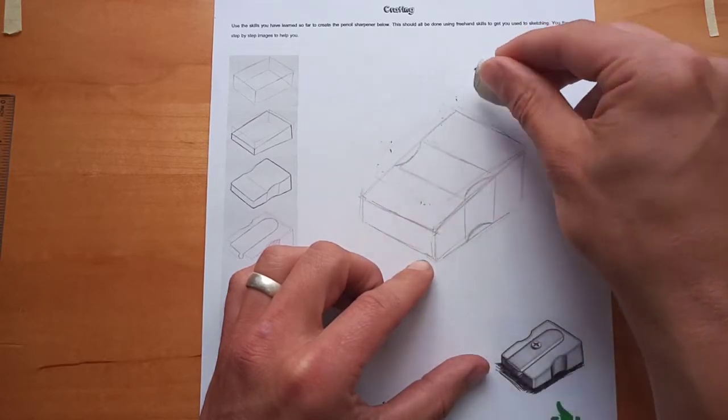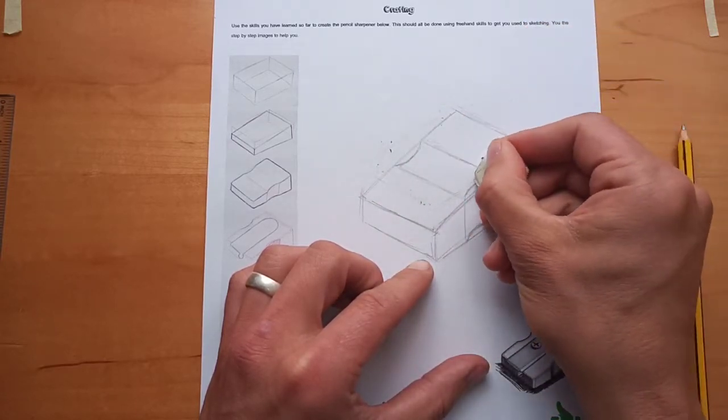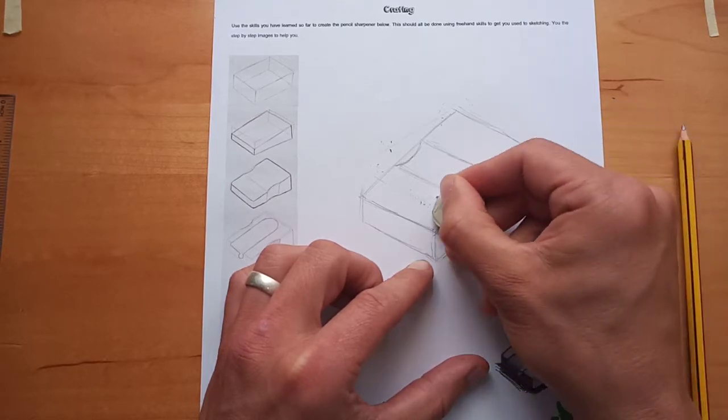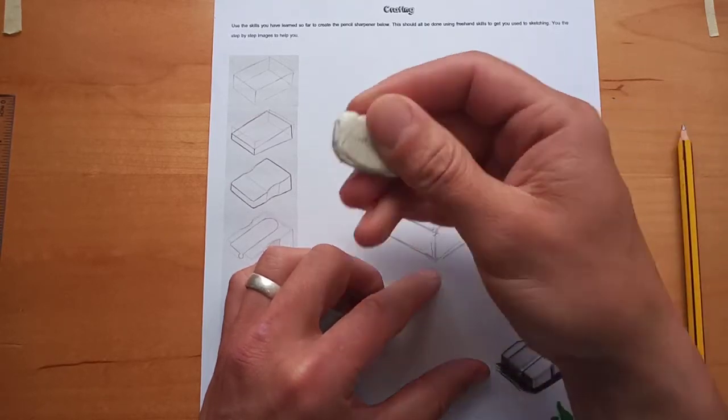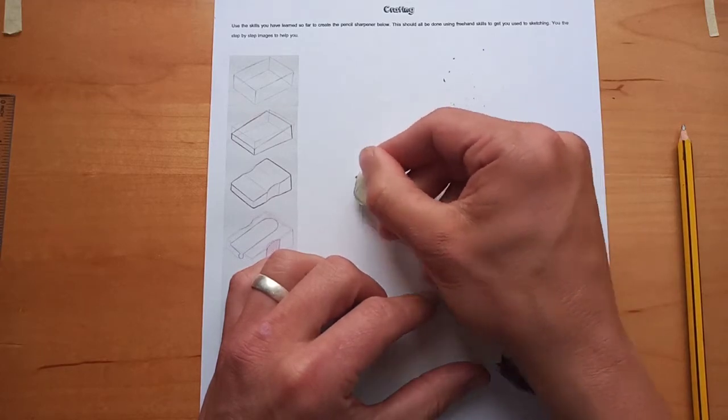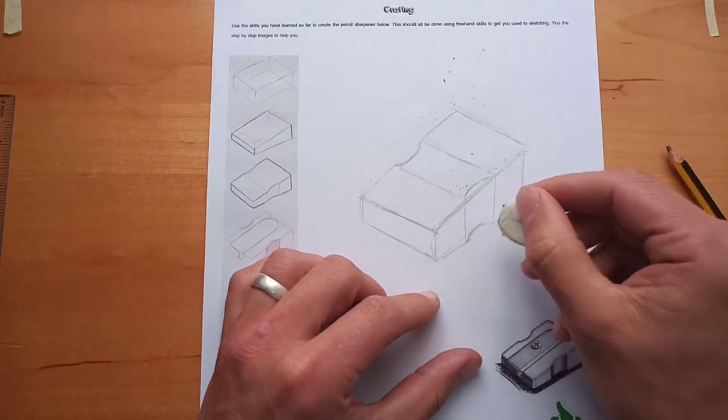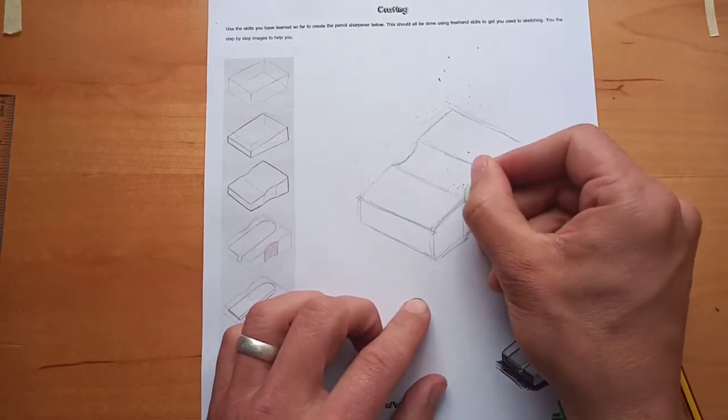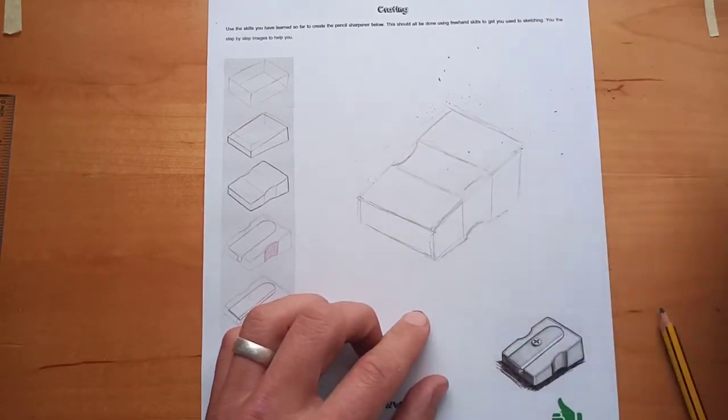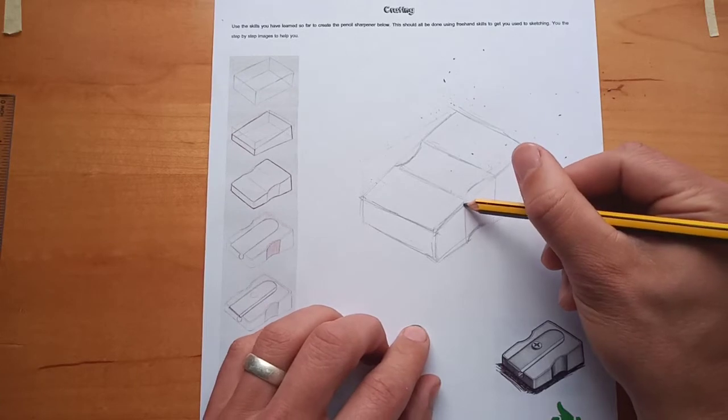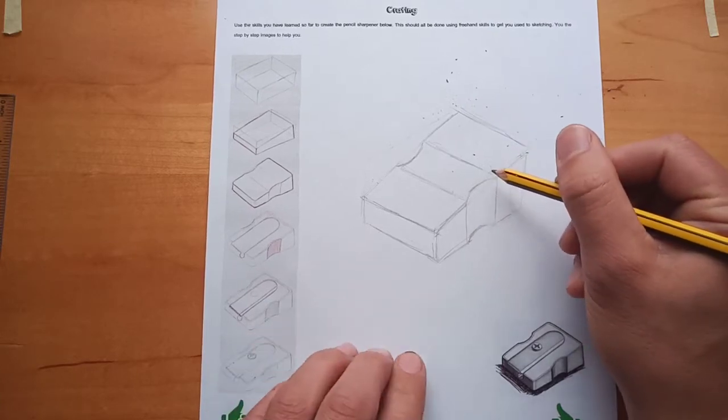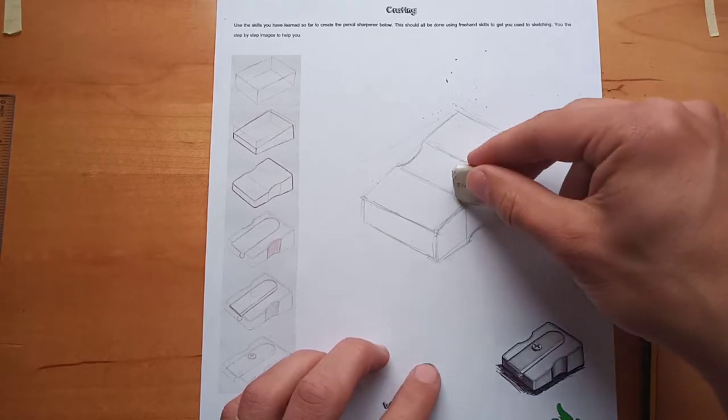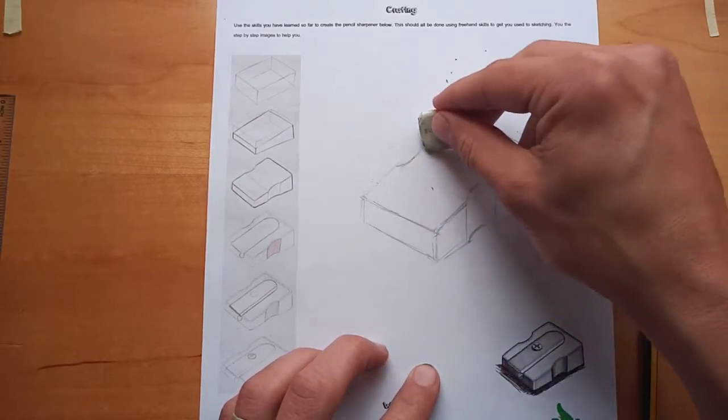Just to take a bit of detail out from the construction lines. Everything can be faint at this stage. You can go over it with a fine liner later. But this stage is all about sketching. So that's starting to give us a shape. Just one line there for the pencil sharpener. From there, next thing we can consider doing. We can take out those lines there. They're not going to be required anymore either.